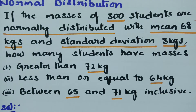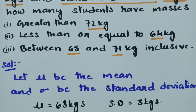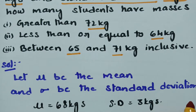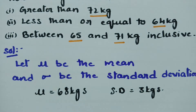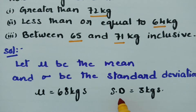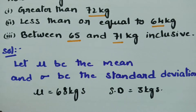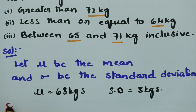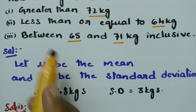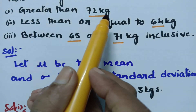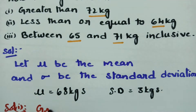From the question, the mean mu is given as 68 kg and the standard deviation sigma is given as 3 kg. For solution one, we need to find the number of students with mass greater than 72 kg.